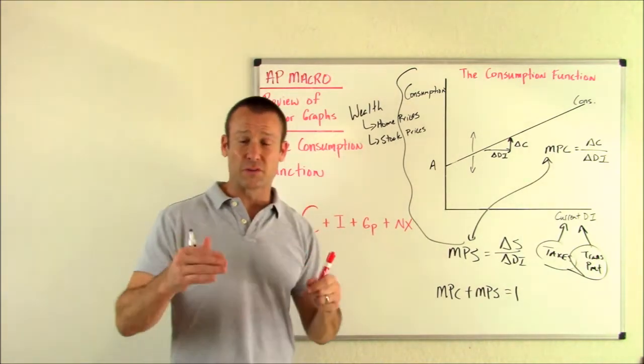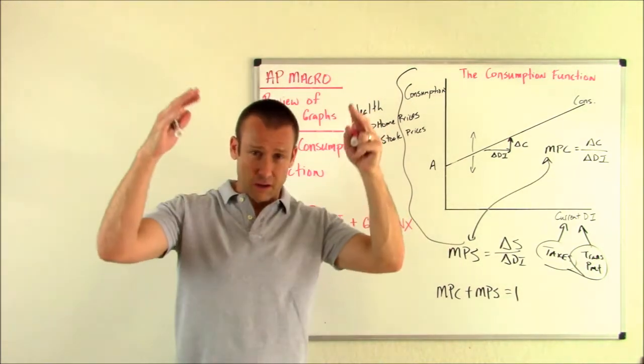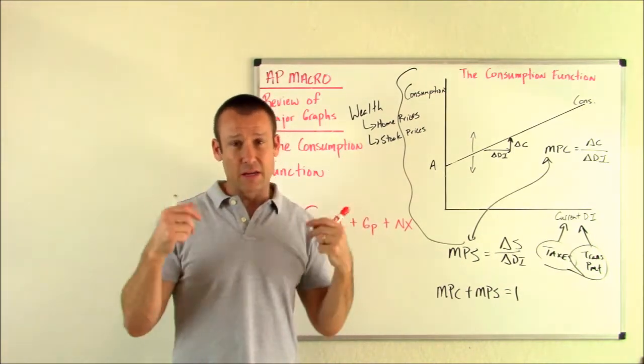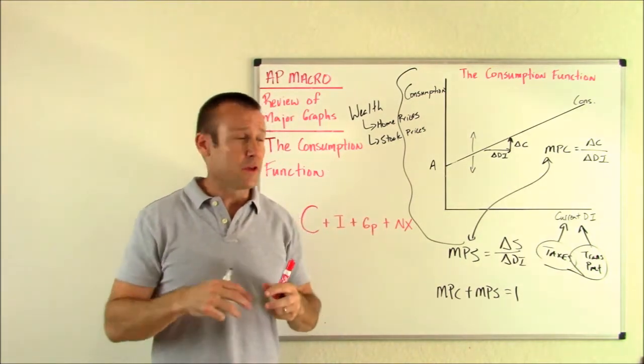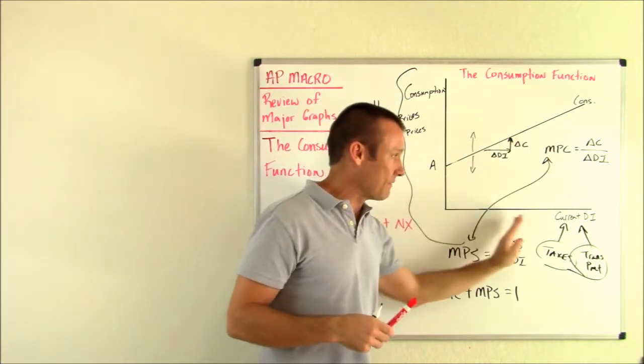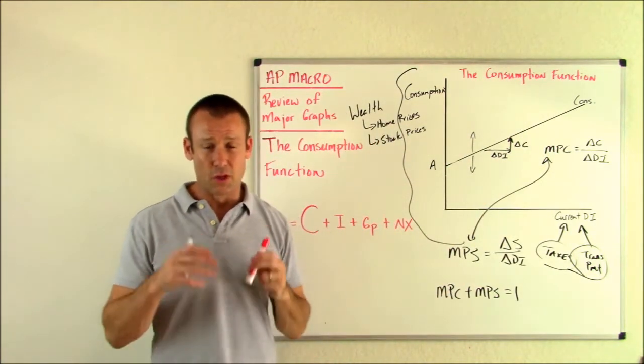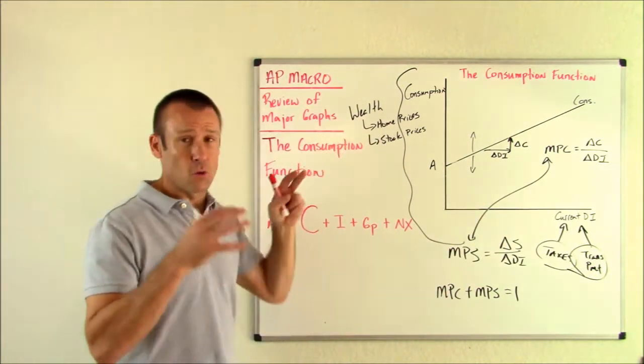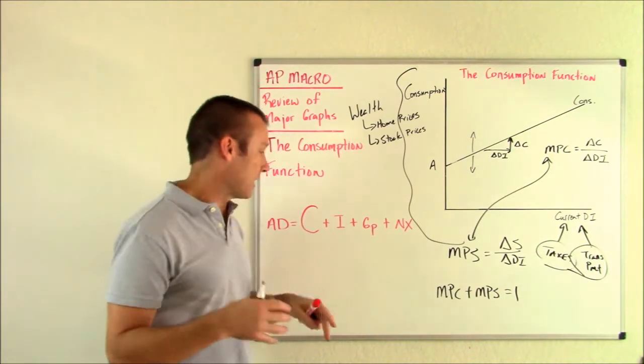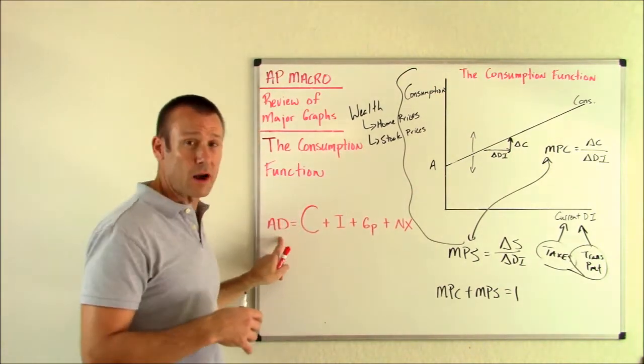Same with the stock market. The stock market crashes. It comes way down. Americans say, hey, I feel less wealthy. I'm now going to spend less at every level of current disposable income. So definitely wealth effects are big on consumption and therefore aggregate demand.